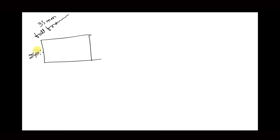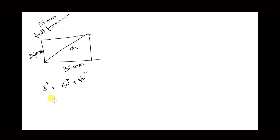If we look at the full-frame camera, the normal lens is considered as 50mm. If we look at the sensor, how do we calculate it? If we look at the sensor as a rectangle, what size is the sensor? It is 24mm by 36mm. We are going to find the diagonal using the Pythagorean theorem.